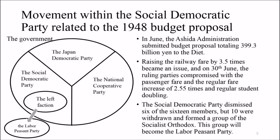Regarding movement within the Social Democratic Party related to the 1948 budget proposal: in June, the Ashida administration submitted a budget proposal totaling 399.3 billion yen to the Diet. Raising the railway fare by 3.5 times became an issue, and on 30th June the ruling parties compromised on a passenger fare and regular fare increase of 2.5 times, with student fares doubling.